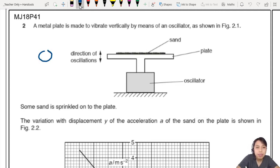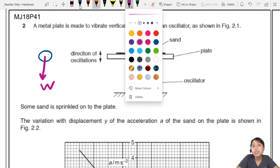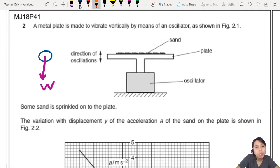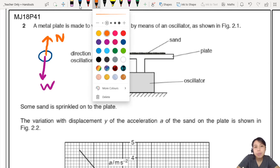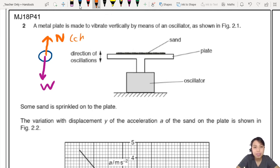So if I zoom in on a sand particle, the sand particle will have a weight acting downwards. And is this constant all the way? Yes, it is constant all the way. But what is changing though, is the normal contact force. I'll draw it upwards. And this one will change depending on where the plate is. If the plate is down there, the plate is up there.